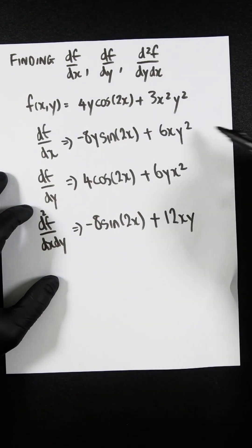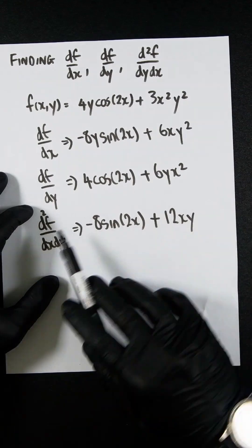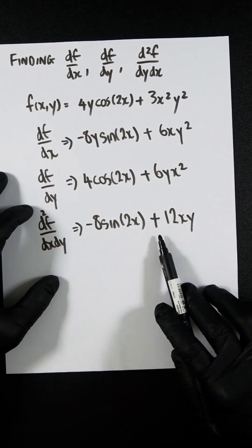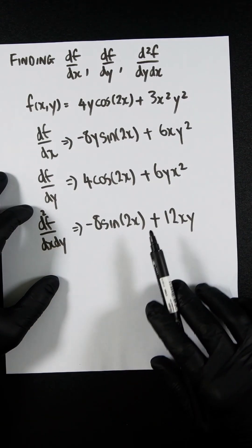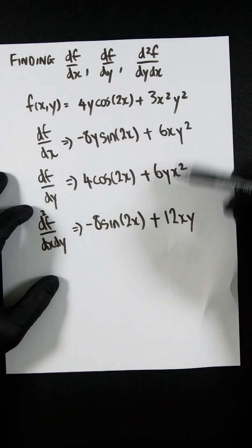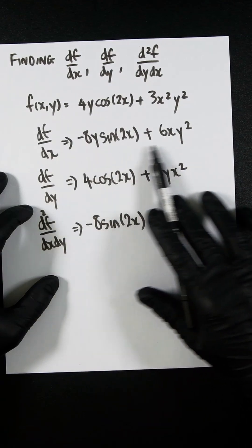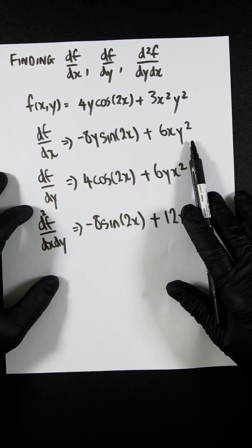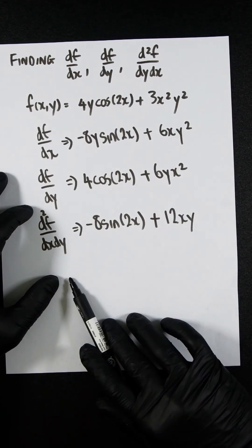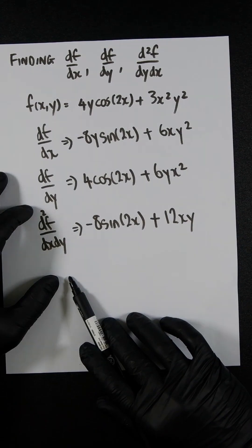So now we have found out what df/dx is, df/dy, and d²f/dxdy. The crucial thing here is to not add these together or multiply them with one another. You just take the df/dx and you differentiate it again to find out what the d²f/dxdy is.